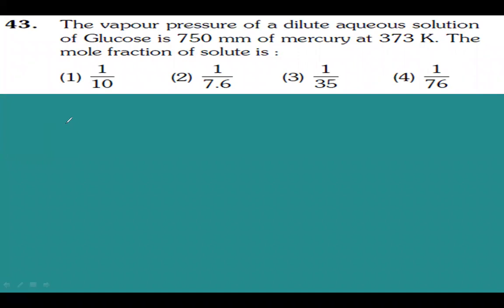The vapor pressure of solution is 750 mm of Hg. At this temperature, the vapor pressure of pure water is 760 mm of Hg. This value is not given in the question, but the vapor pressure of pure water will be 760 mm of Hg.